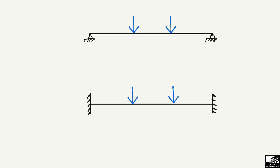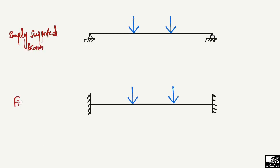Here I have taken a simply supported beam as a reference, so I can differentiate and explain the fixed beam. This is the reference beam which is a simply supported beam, and here we have a fixed beam. I will define the fixed beam according to the reference of the simply supported beam.